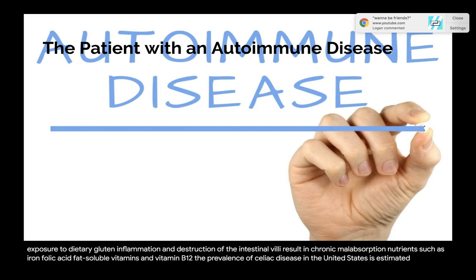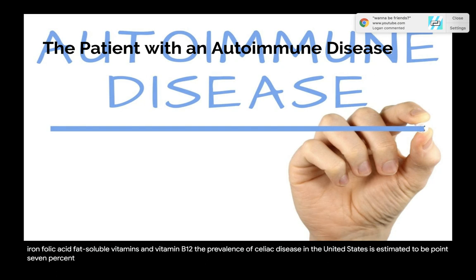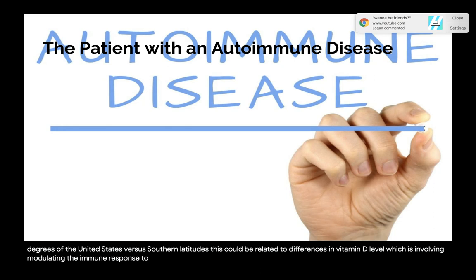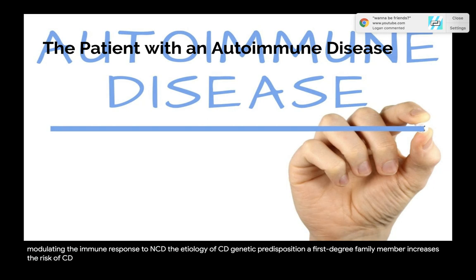The prevalence of celiac disease in the United States is estimated at 0.7%. It occurs more frequently in women and non-Hispanic whites. Celiac disease is five times more common in individuals living in northern latitudes (35–39 degrees) versus southern latitudes, possibly related to differences in vitamin D levels, which modulate the immune response.